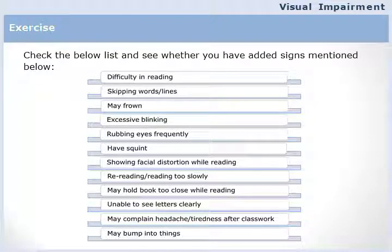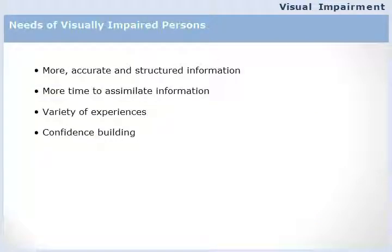Check the following list of signs of a person at risk of visual impairment: difficulty in reading, skipping words or lines, may frown, excessive blinking, rubbing eyes frequently, having a squint, showing facial distortion while reading, re-reading or reading too slowly, holding the book too close while reading, unable to see letters clearly, complaining of headache or tiredness after classwork, and may bump into things.